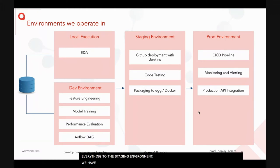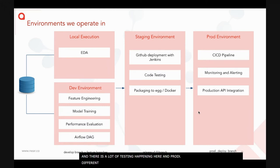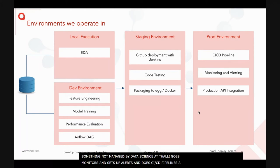We follow a particular structure when moving code to staging: a project name divided into DAGs and scripts directories. There's thorough product and code testing; any changes go back through development, then staging. Finally the code is packaged and Dockerized before going to production. The production environment is managed entirely by the engineering or DevOps team, who handle monitoring, alerts, production API integration, and CI/CD pipelines.